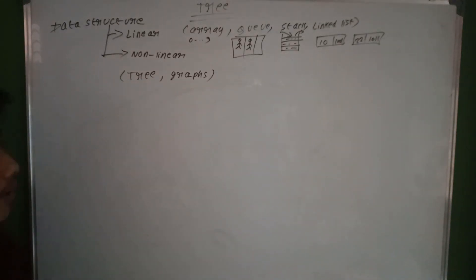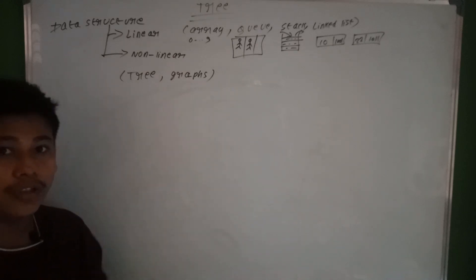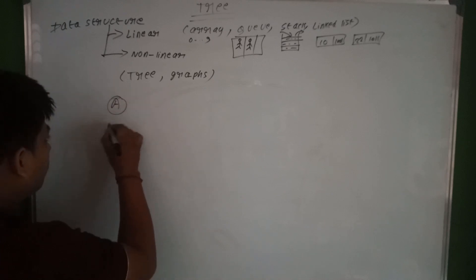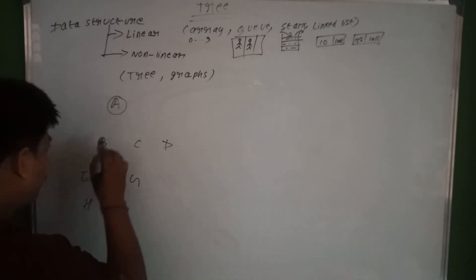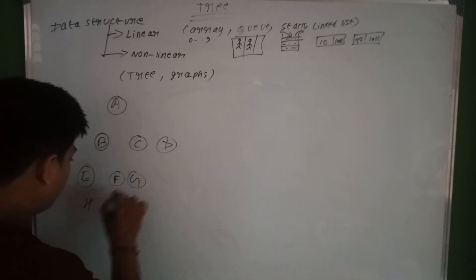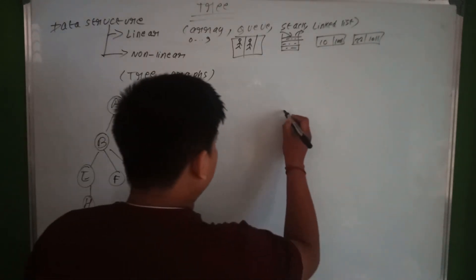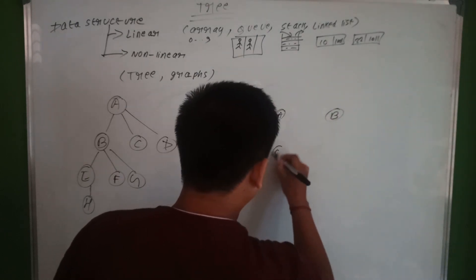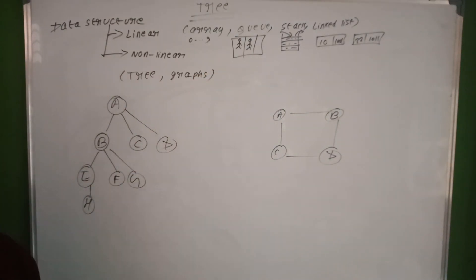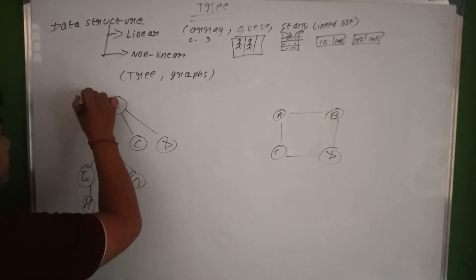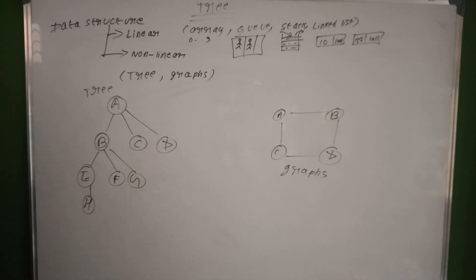The graph is also a non-linear data structure. Both the tree and the graph are non-linear data structures.